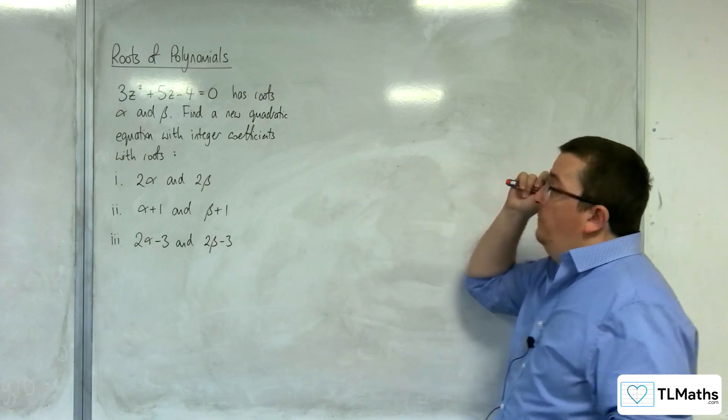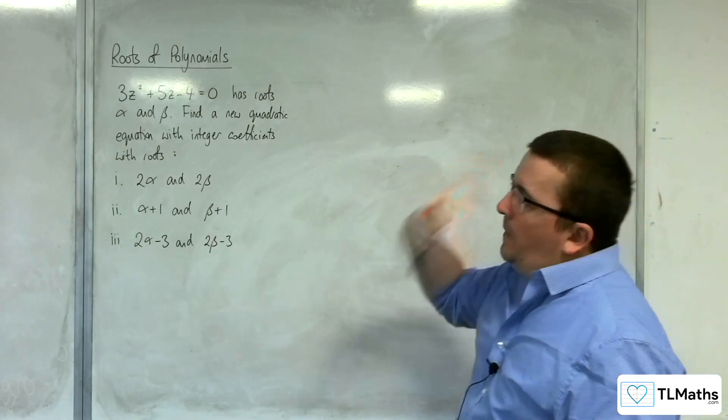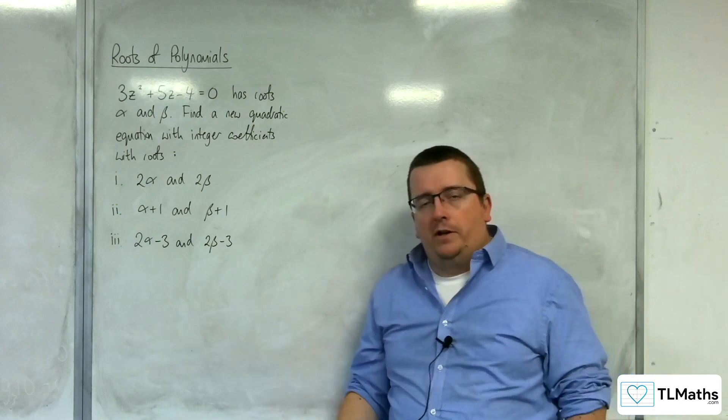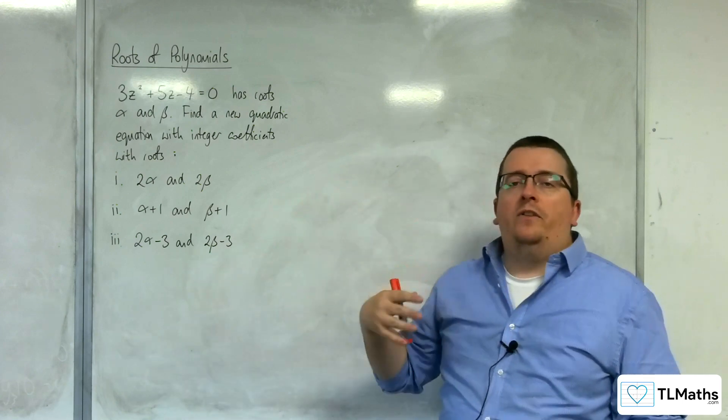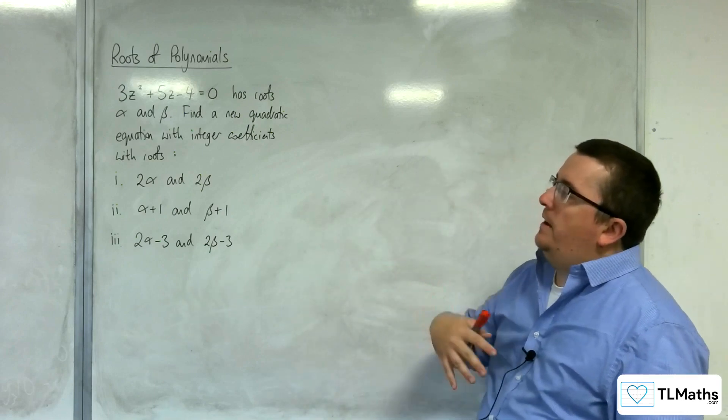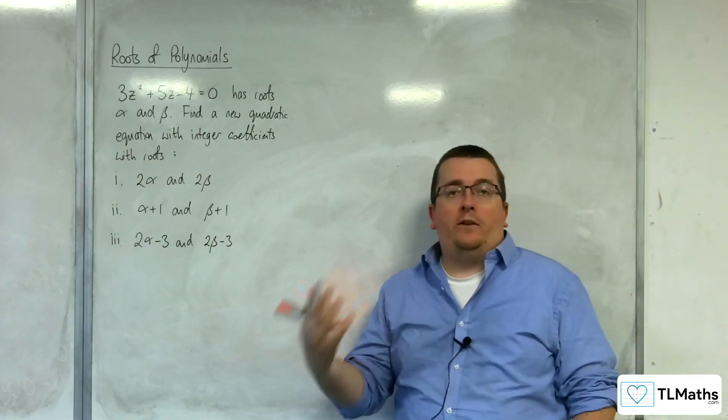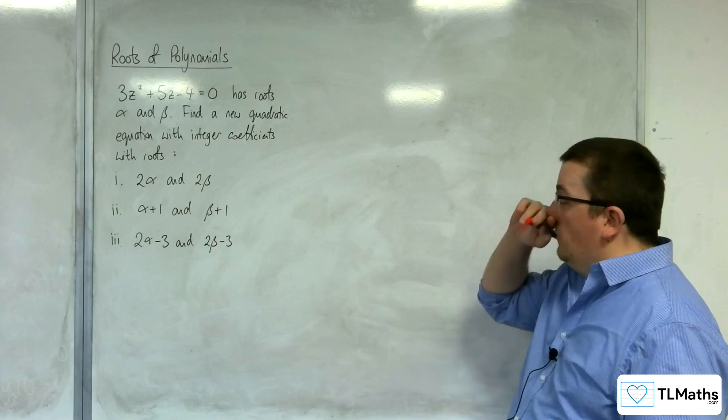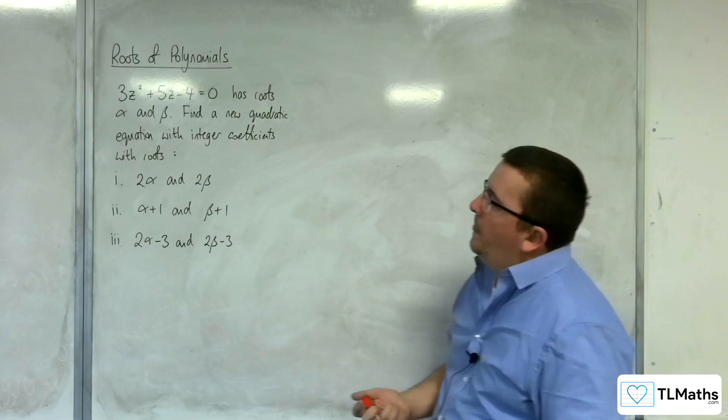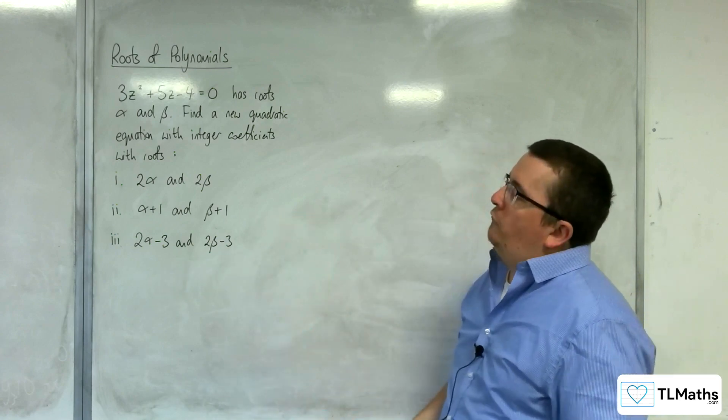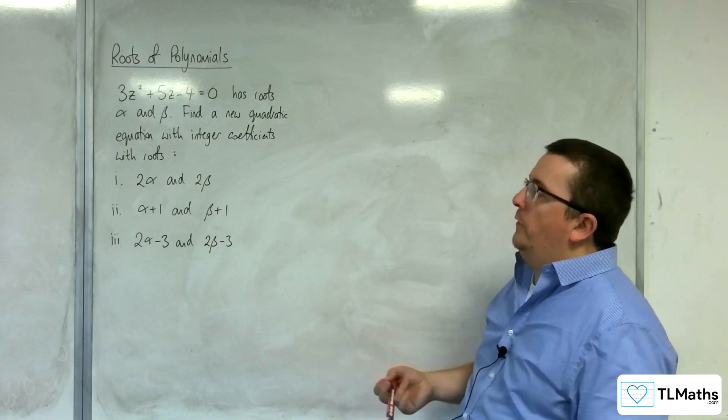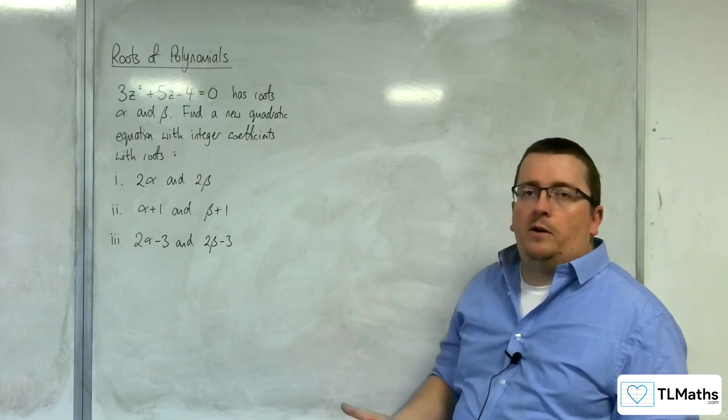In this video, we're going to be looking at going back to quadratics and thinking about an alternative way rather than working out the sum of the roots and the product of the roots, extending that up to cubics and quartics in the next couple of videos. We're going to look at 3z squared plus 5z take away 4 equals 0, and this has got roots alpha and beta. Find a new quadratic equation with integer coefficients with roots. So we're going to go through three examples here.